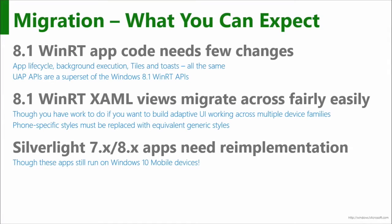An 8.1 WinRT app code needs a few changes. Windows 10 UAP is a superset of Windows 8.1 WinRT — it doesn't mean nothing is deprecated, there will be a few methods — but across the board it's a very compatible story. Your XAML views written for an 8.1 WinRT app are going to migrate across fairly easily as well. You'll have some work to merge them into an adaptive UI, but we're going to have ways of taking those XAML views developed for specific targets on 8.1 and plugging them as easily as possible into a Windows 10 UAP solution.